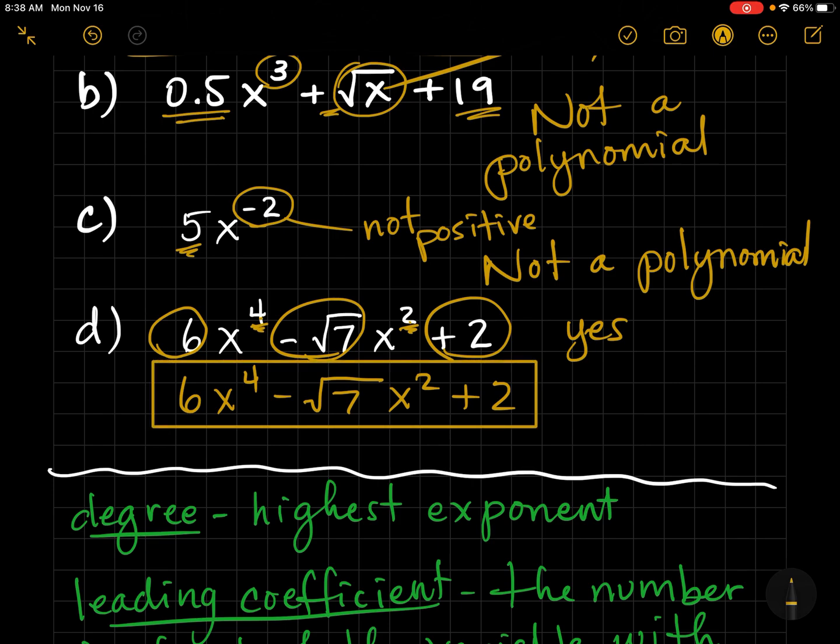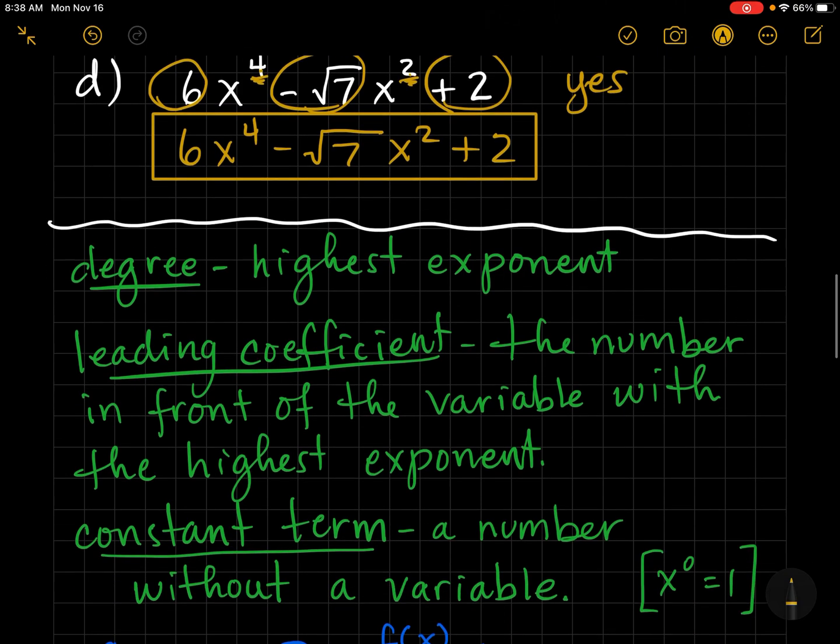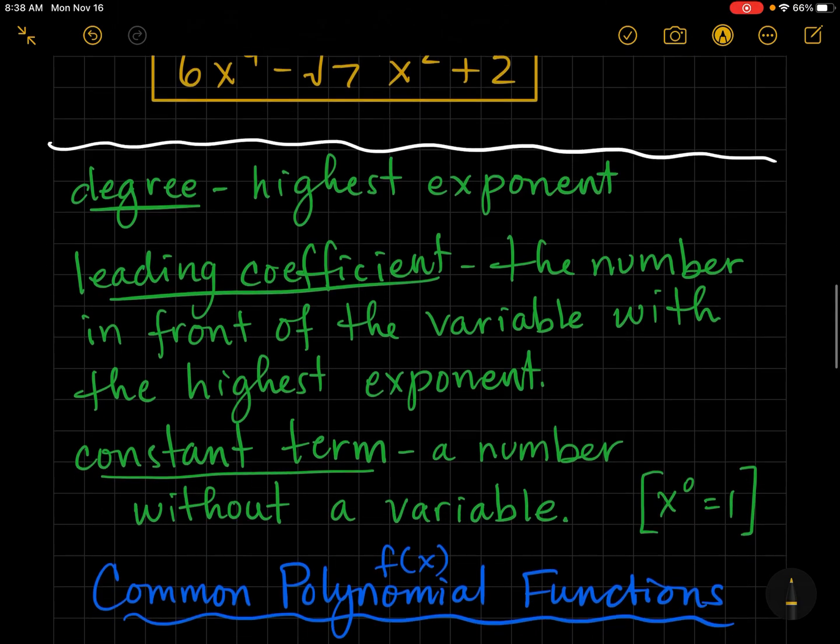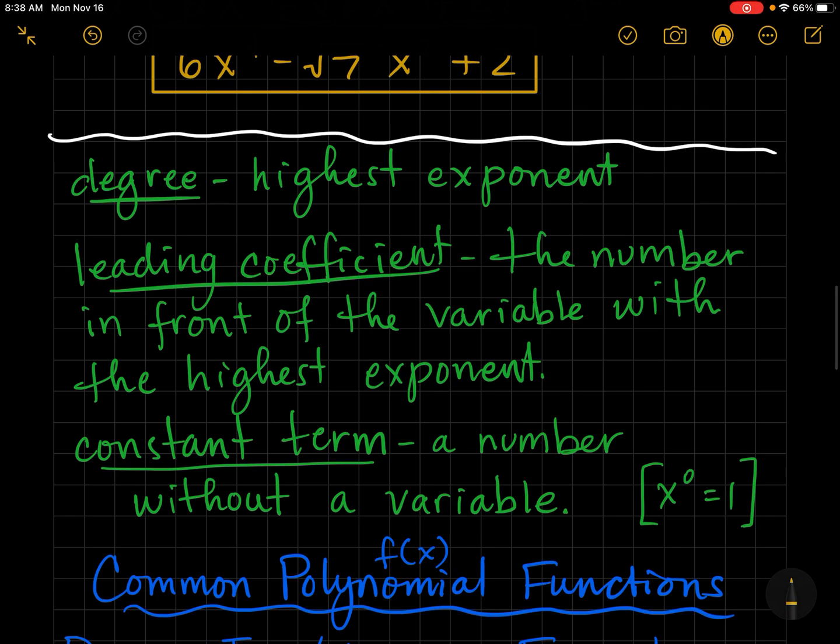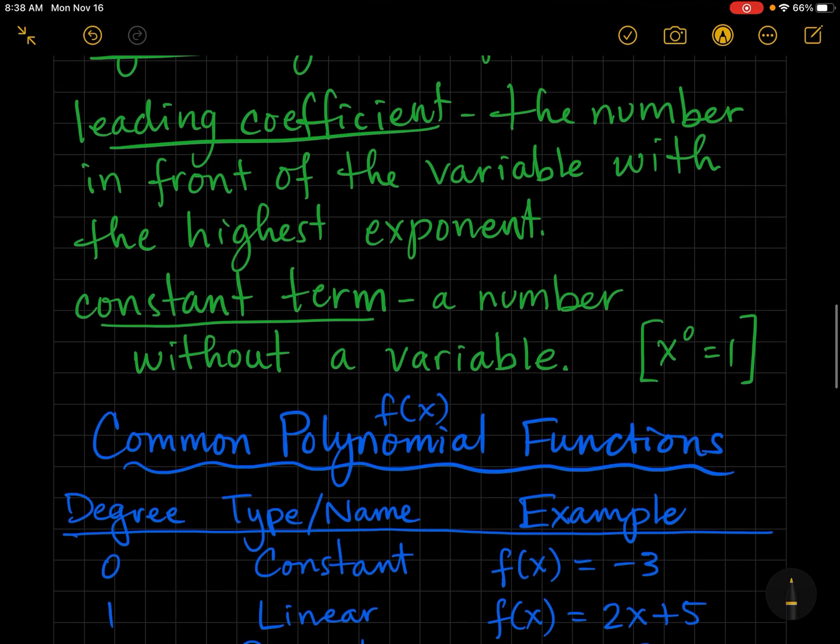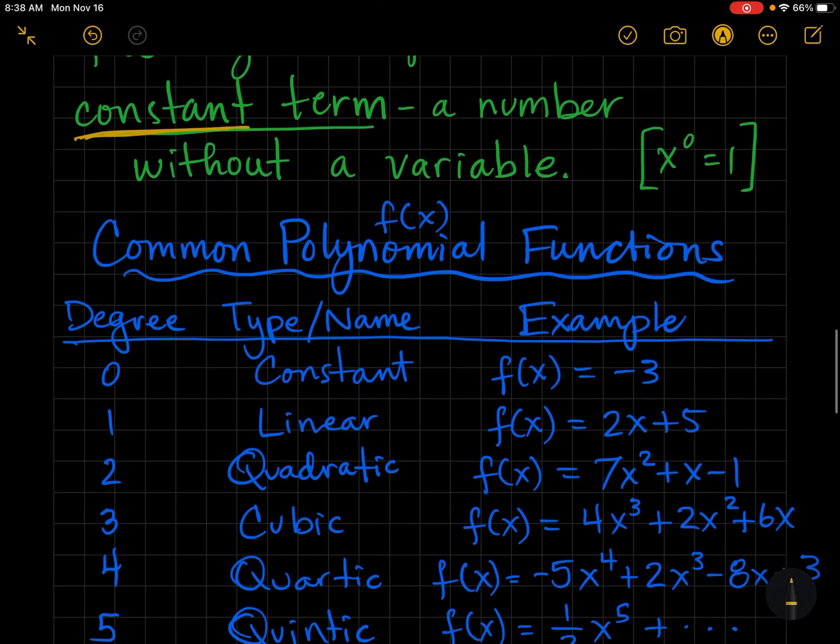Let's review a few more concepts. The degree of a polynomial is simply the highest exponent. The leading coefficient is the number in front of the variable with the highest exponent. And the constant term is the number without a variable. Thus, its name, it does not vary.